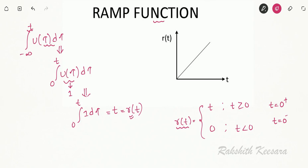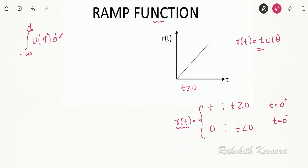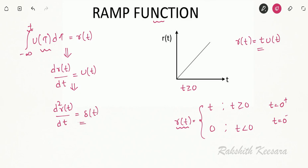While representing the ramp function we write it as t times u(t). If we simply write r(t) equal to t, this indicates the signal exists for negative time also. But our original signal only exists for t greater than or equal to 0, so it is advisable to multiply t with u(t). So the ramp function is t times u(t). Integration of unit step is ramp, so differentiation of ramp is unit step, and double differentiation of ramp is the impulse function.